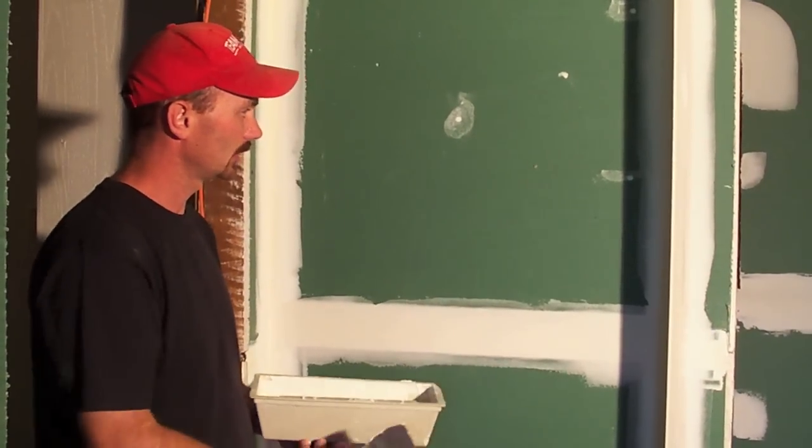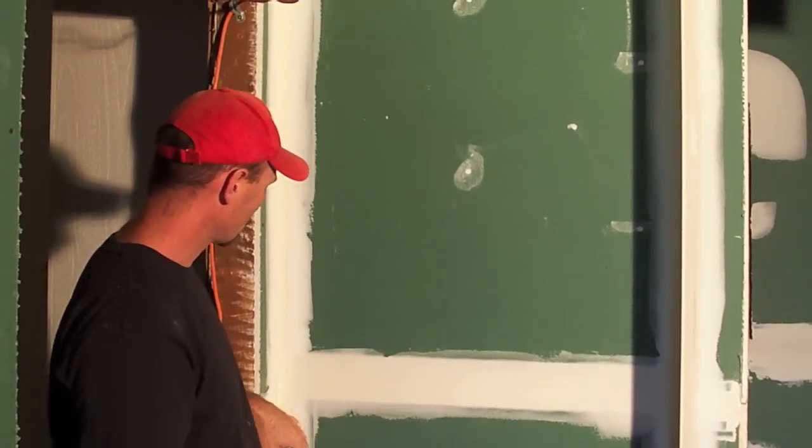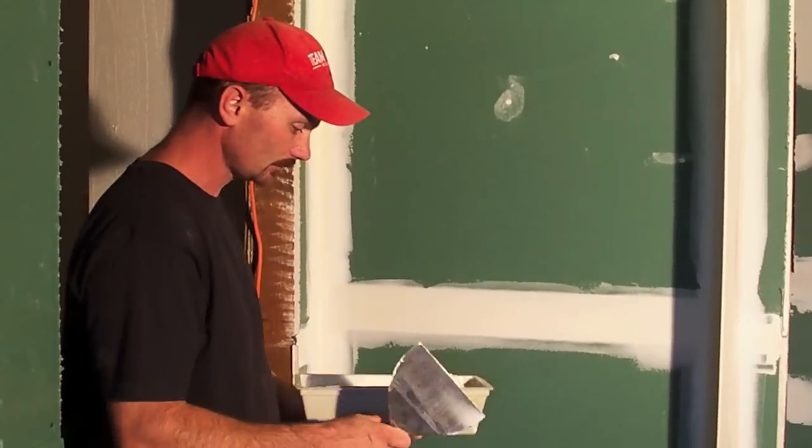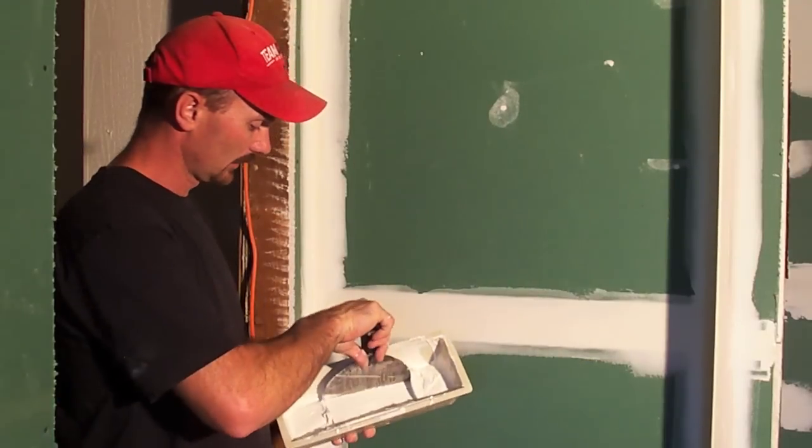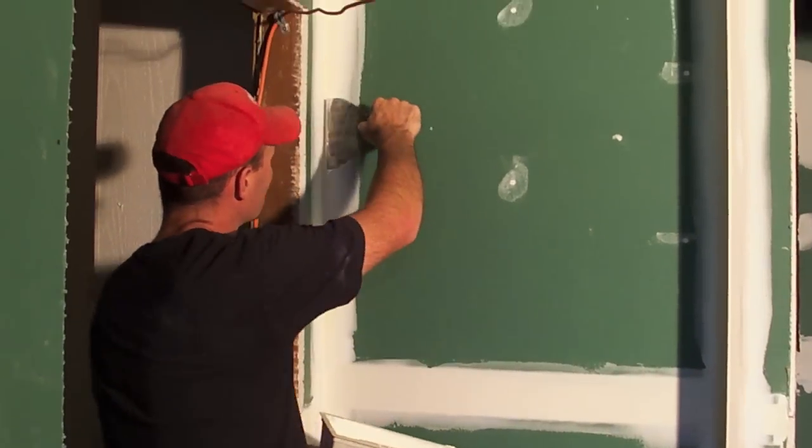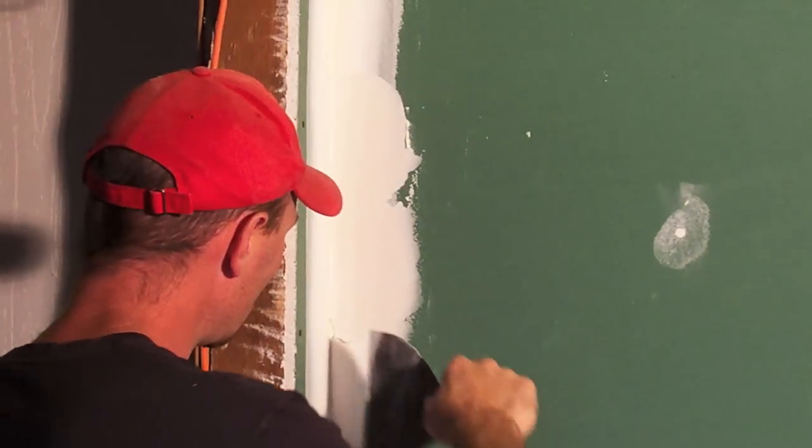Okay so we've got our bevel, we've got that second coated. Now we're going to move on to an inside corner right here and basically same knife again. And I just want to apply some mud to both sides of the corner.